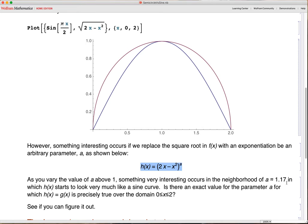a is about 1.17 in which h of x resembles the sine wave very closely. So the question is, and the math problem is, is there an exact value for the parameter a for which, here's the question right here, is there an exact value for the parameter a for which h of x, that is the algebraic function, is precisely equal to g of x, the sine, the trigonometric function